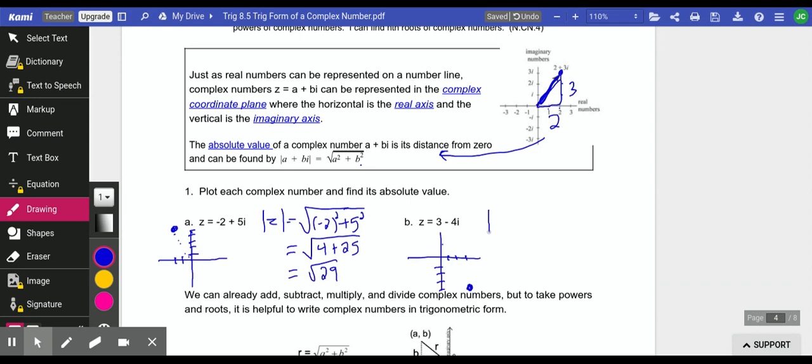To find the absolute value, that's this distance from 0. It's the Pythagorean theorem or the distance formula. That's going to be the square root of 25, so the absolute value of that is just 5.